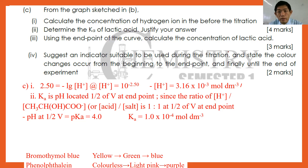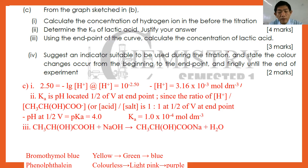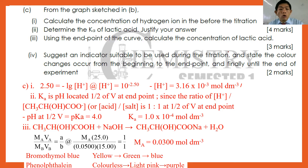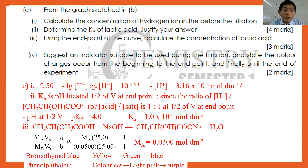Number three: using the endpoint of the titration curve, calculate the concentration of lactic acid. You use MA·VA = MB·VB. Substituting: MA × 25 = 0.05 × 15, giving concentration MA = 0.030 mol dm⁻³. Finally, suggest a suitable indicator. You can use bromothymol blue, which changes from yellow to green to blue, or phenolphthalein, which changes from colorless to light pink to purple.